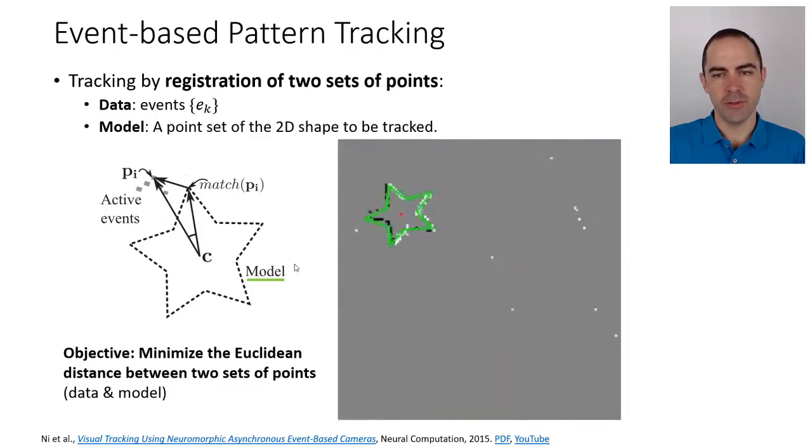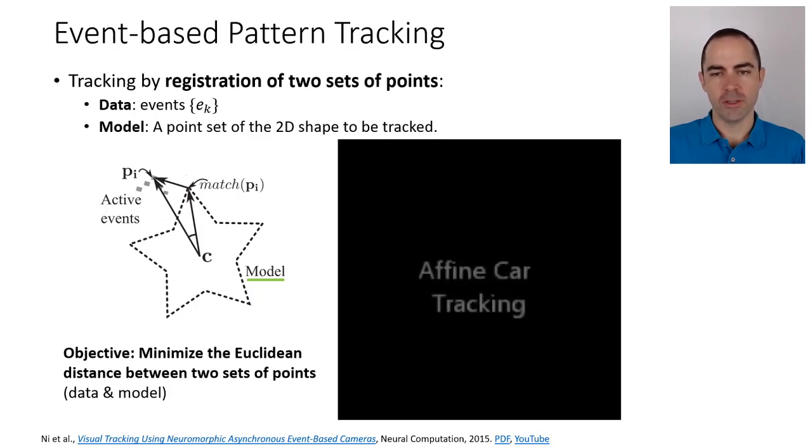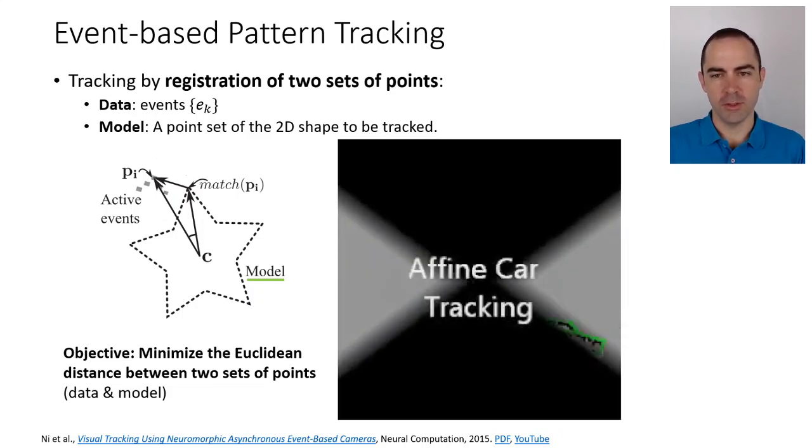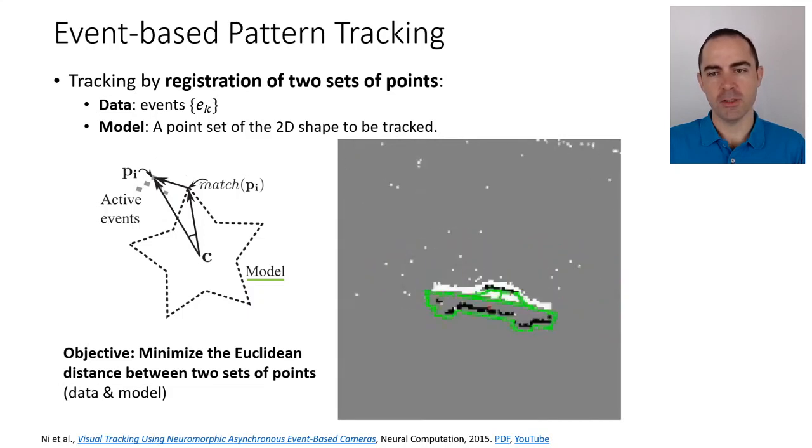Let's take a look at it with a video. Here the model is represented in green and the data are the events in dark or bright gray. Remember, gray is the absence of events. This is working quite well and is able to track the star with affine motions.